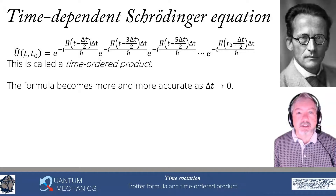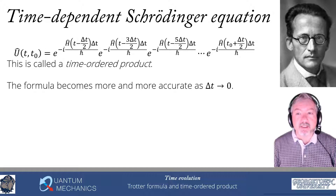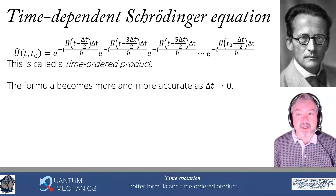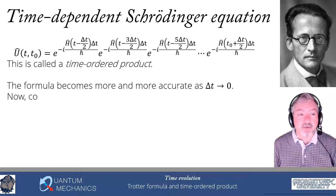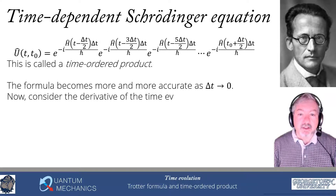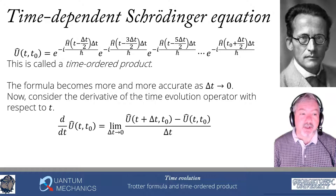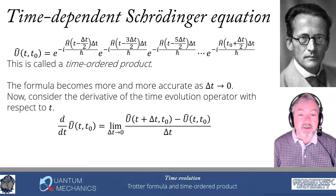We're now going to discuss the time-dependent Schrödinger equation. The Trotter formula becomes more and more accurate as we take the limit δt → 0. Taking that limit might make your head swim, because you have all these exponential factors. So instead we find an equation of motion for the time evolution operator by looking at the derivative of U(t, t0) with respect to t, defining it via the limit as δt → 0 of [U(t+δt, t0) − U(t, t0)] / δt.